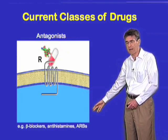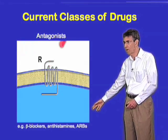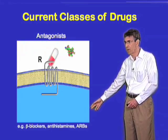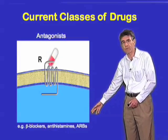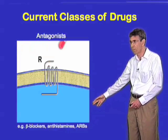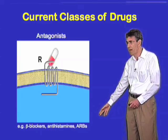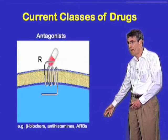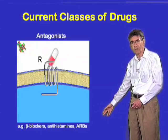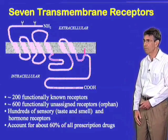Several common examples of blockers or antagonists that you may be aware of are beta-blockers, which is simply shorthand for beta-adrenergic receptor blockers or antagonists, antihistamines, or angiotensin receptor blockers, also known by the shorthand ARBs.